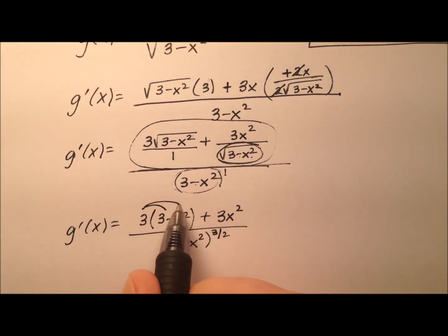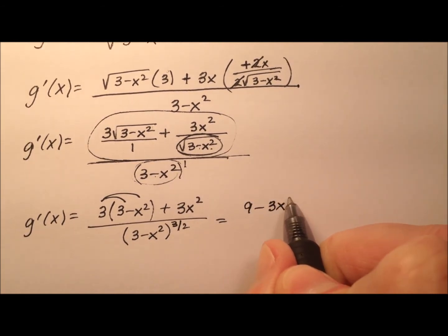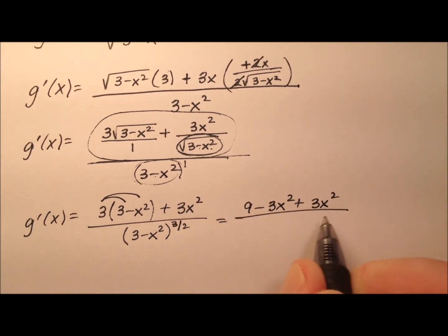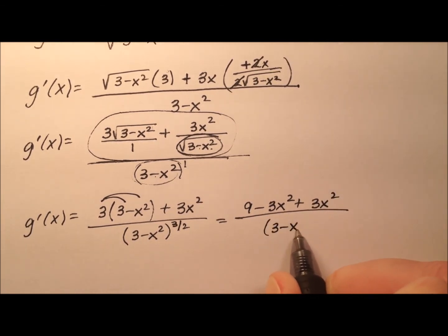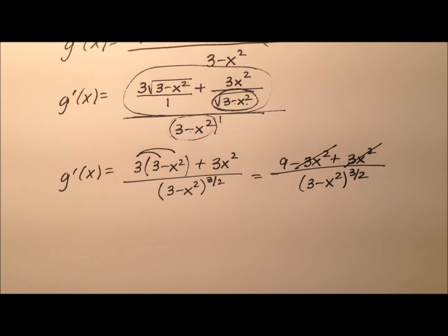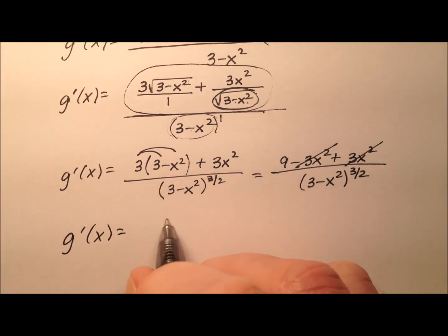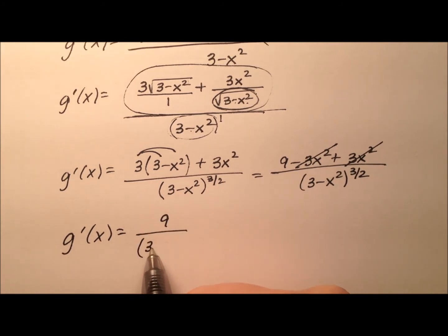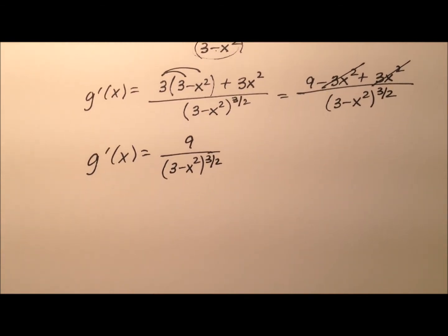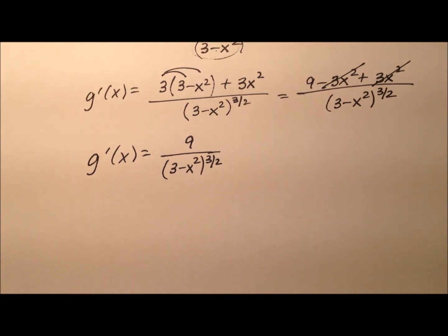Distributing through gives us 9 minus 3x squared plus 3x squared, all over 3 minus x squared to the power of 3 halves. Those two middle terms cancel, which is very nice. So this first derivative, which looked a little unwieldy, actually came out to be not too bad: the first derivative is 9 over the quantity 3 minus x squared to the power of 3 halves.